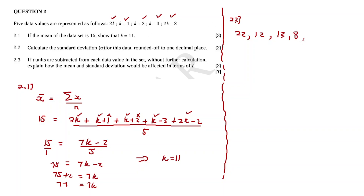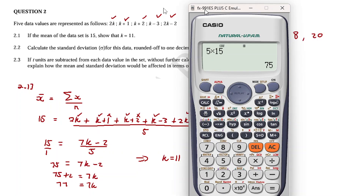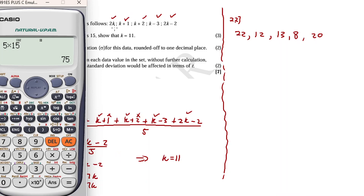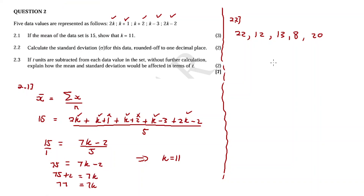Let me double-check: 22, 12, 13 — yes. 11 minus 3 is 8. 2 times 11 minus 2 is 20. That's confirmed. You don't have to show any calculations here; just go straight to your calculator.